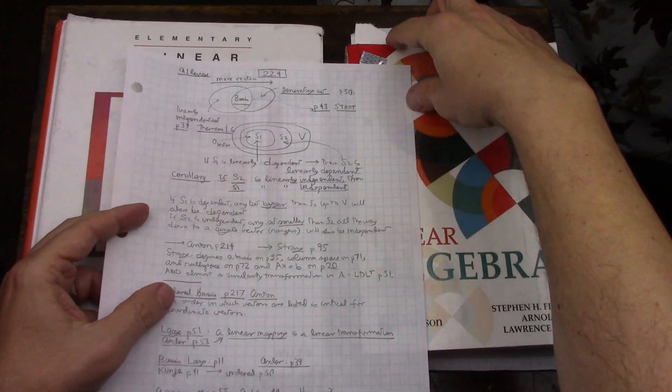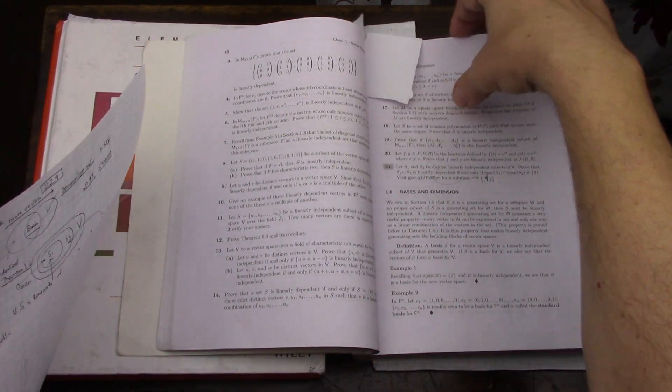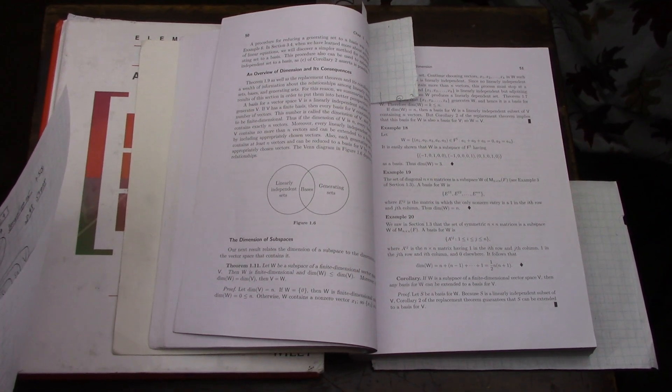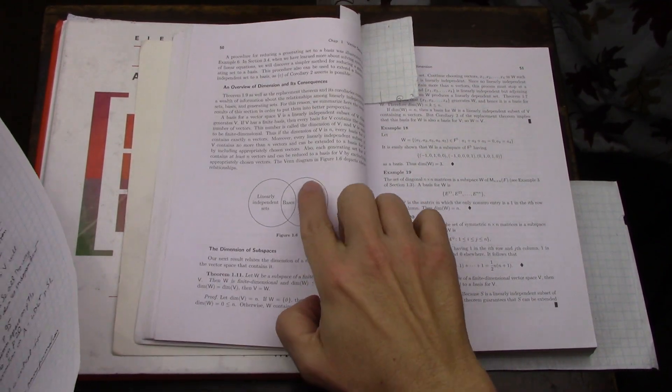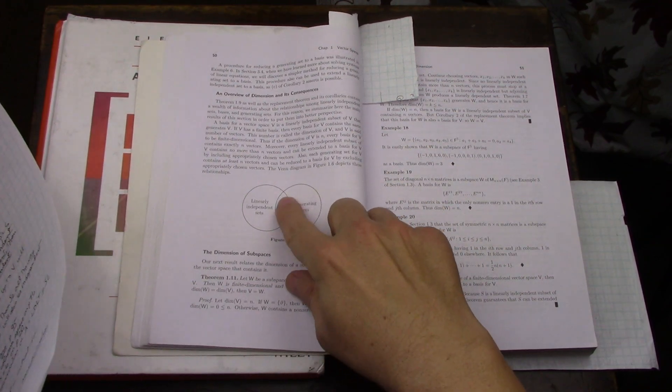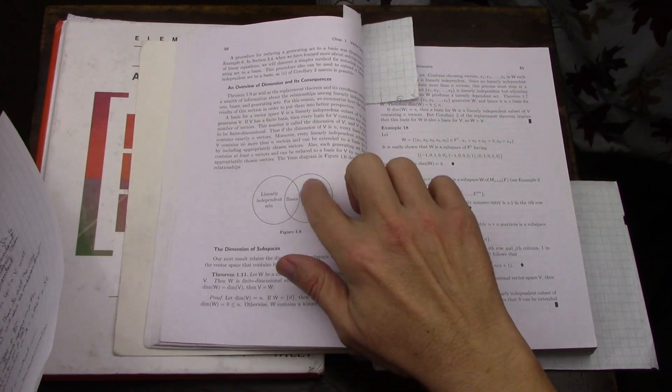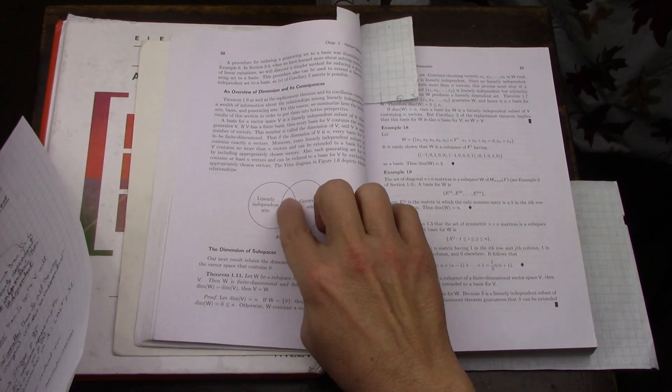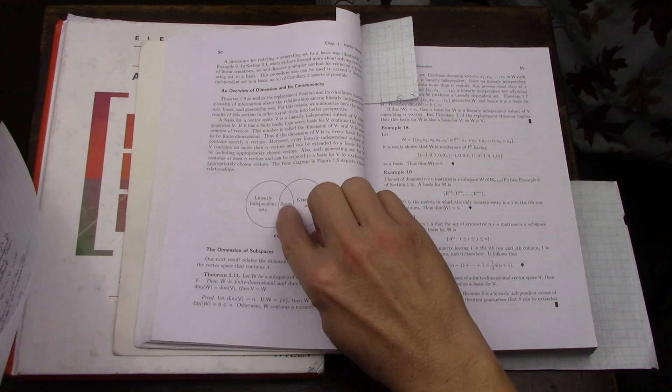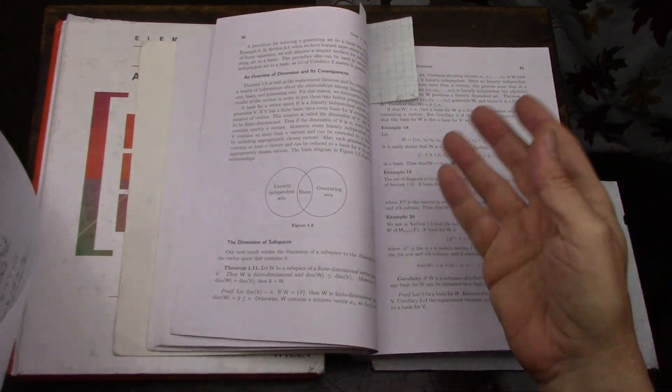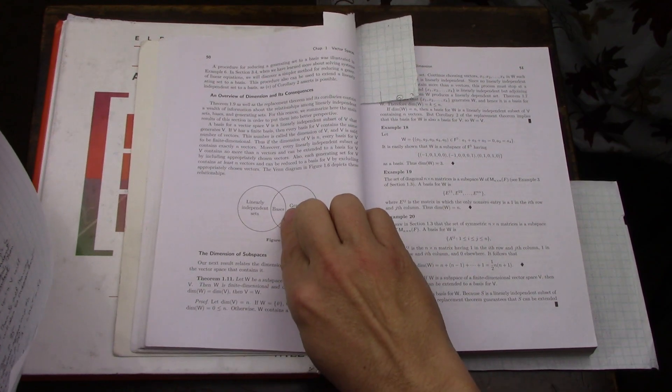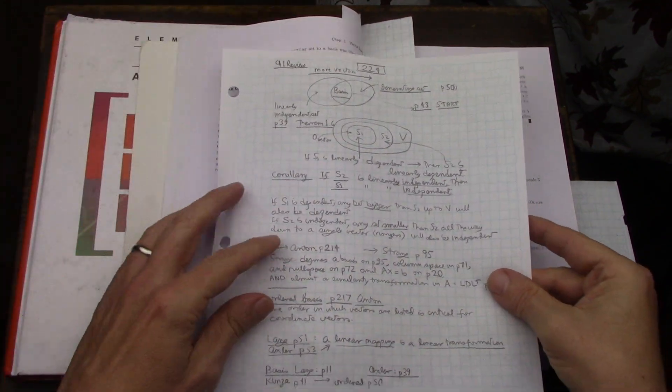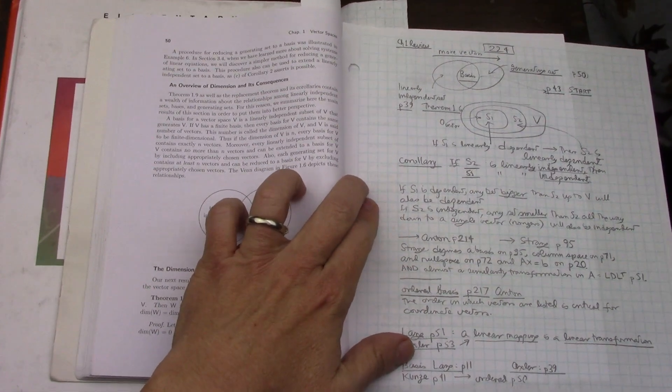The beginning for this idea comes from Friedberg, Insel, and Spence. I really liked this diagram that they have where the most vectors you can have in a vector space is a generating set that spans the space, but there's linear dependence going on. Then you start reducing the number of vectors and you get down to what constitutes a basis. But then once you go below that, you're going to start getting linearly independent sets but no longer a basis.